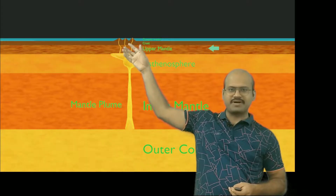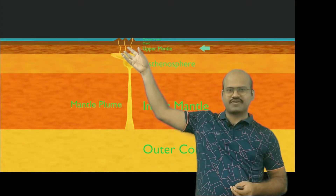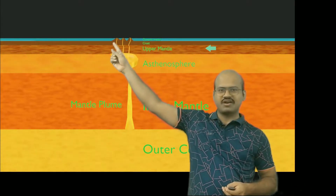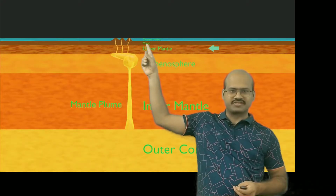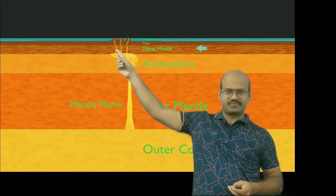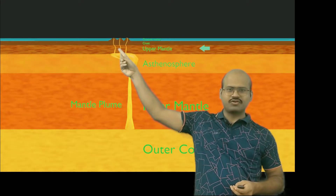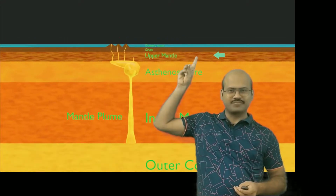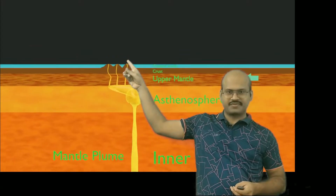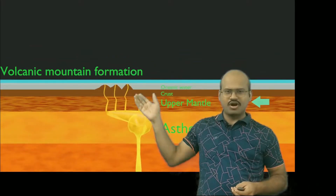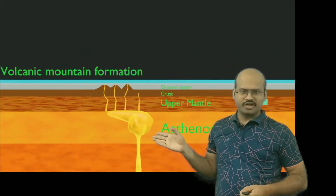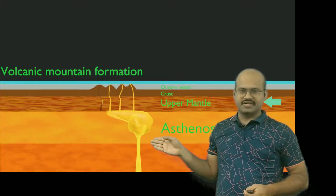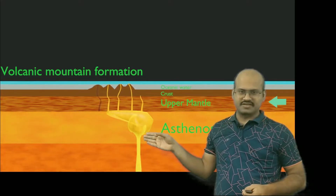The mantle plume as well as the molten rocks which form magma come to the surface through the cracks formed by the bulging of the overlying surface, and because of this, volcanic mountains are formed. Tectonic plates are in continuous motion, but because hotspots are not created by tectonic activities, they are stationary.